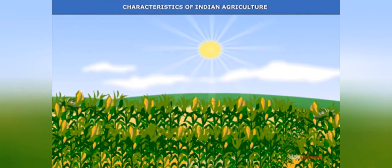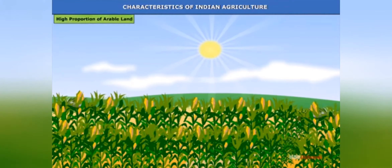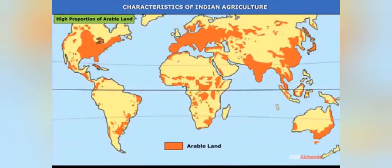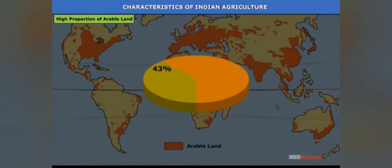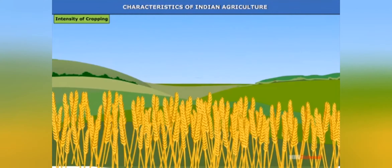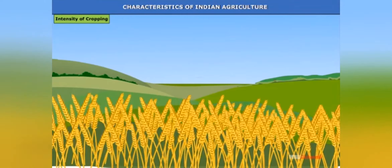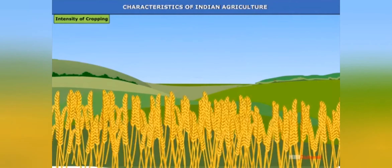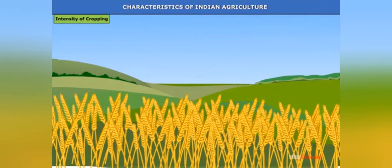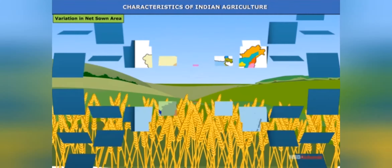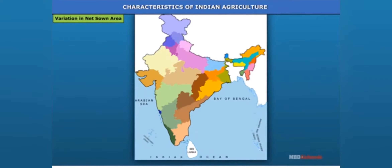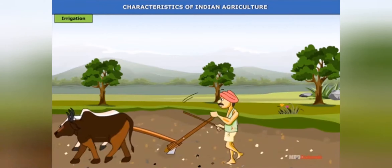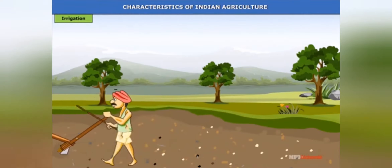Primitive subsistence farming: This type of farming is still practiced in a few pockets of India. Primitive subsistence agriculture is practiced on small pieces of land with the help of primitive tools like hoe, daw, and digging sticks. Family members and some community members are involved in this type of agriculture.